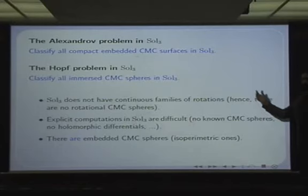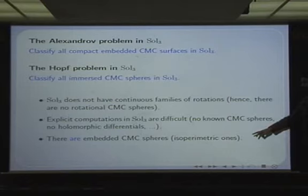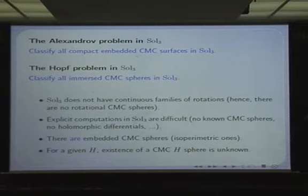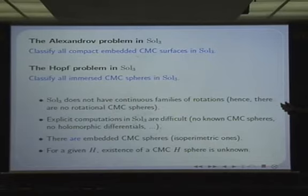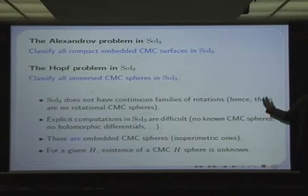It makes sense to classify these surfaces, and it is very desirable because of the relation with the isoperimetric problem. Even though we know there are embedded CMC spheres, what we don't know is the existence of a constant mean curvature sphere for a given value of the mean curvature. For example, if I give you h = 100 or h = 20 million, we don't know if a CMC sphere of that specific value exists.